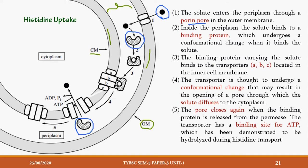Once the entire process is finished, the ABC transporter also returns to its normal structure and normal shape. The transporter underwent conformational change to take histidine inside; it comes back to its original position once histidine goes inside the cell.